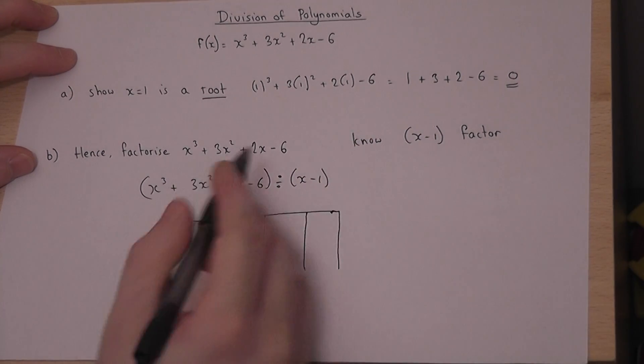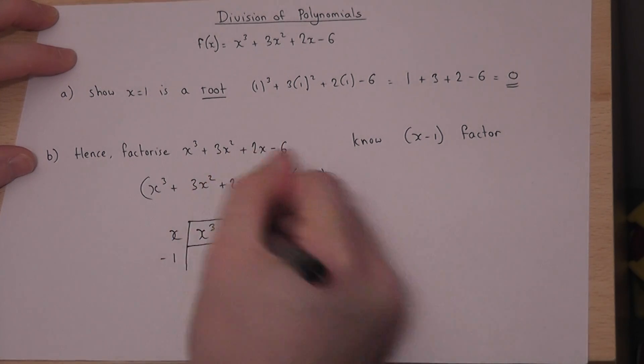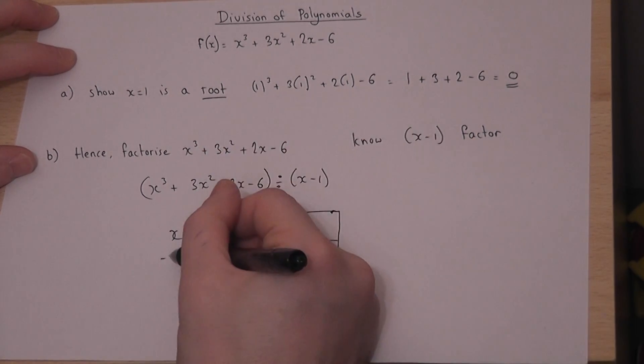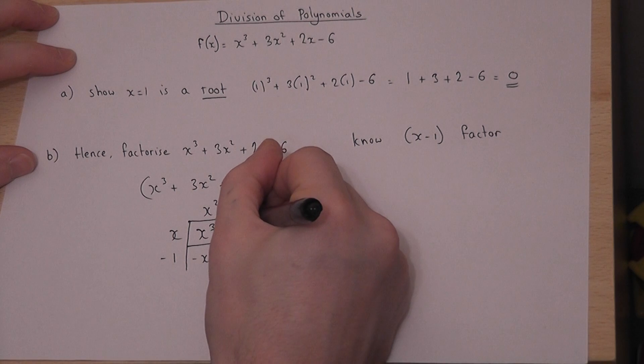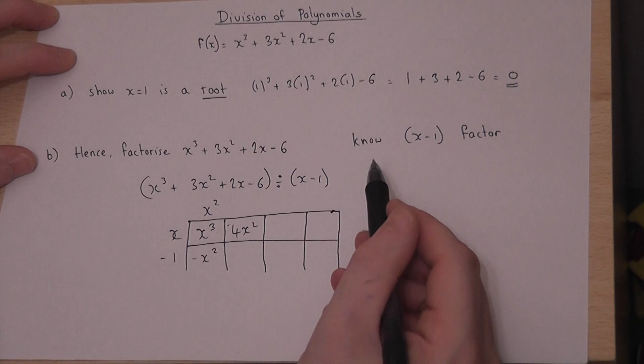Right then, I want an x cubed. I put that into the top left. Now to get an x cubed requires an x squared. But minus 1 times x squared is minus x squared, and I need to have 3x squared. So I need another 4x squared in total. Those two terms combine to give me that term there.